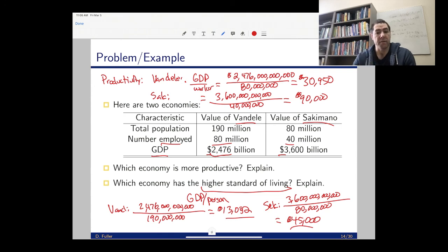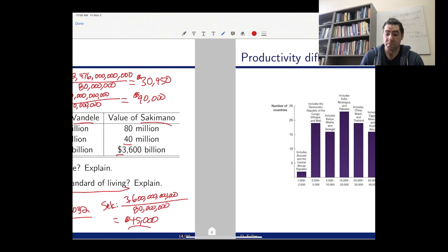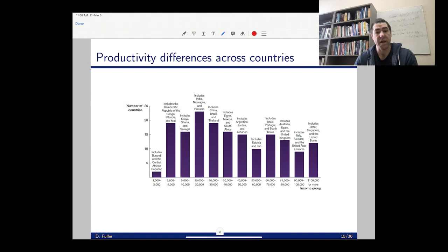These are all pretty straightforward. Once you know which one am I dividing by - for productivity, I'm dividing by employment; for standard of living or GDP per capita, I'm dividing by the population - and that allows me to make some comparisons across countries. What we're going to do next is try to understand some alternative ways to measure standard of living.